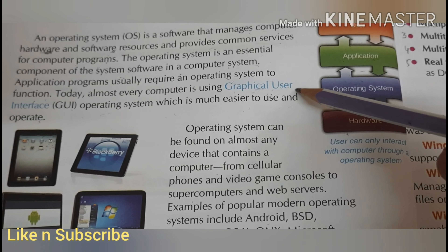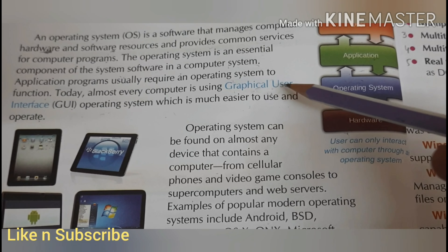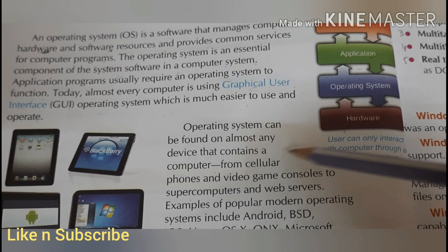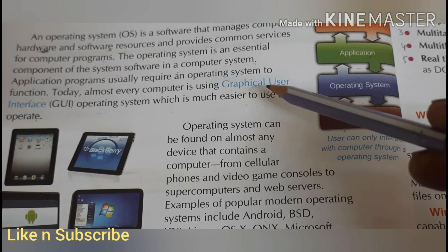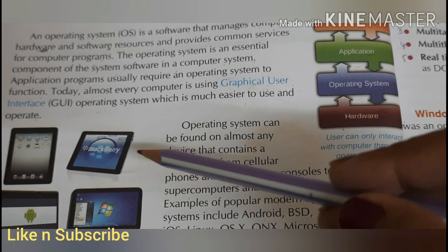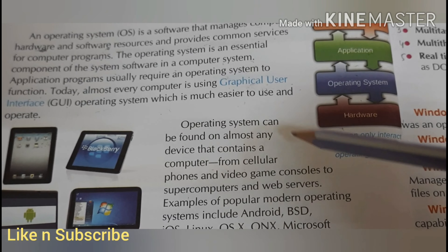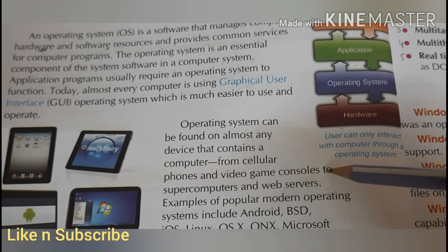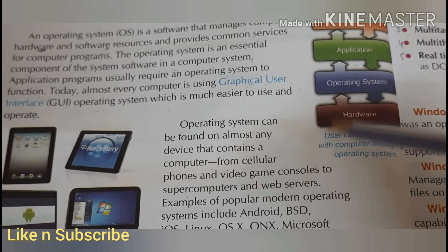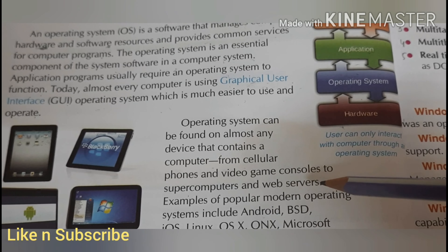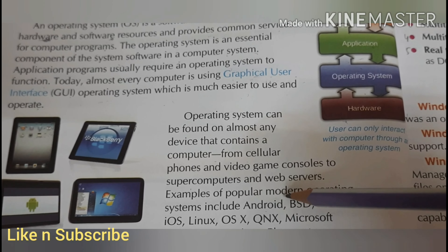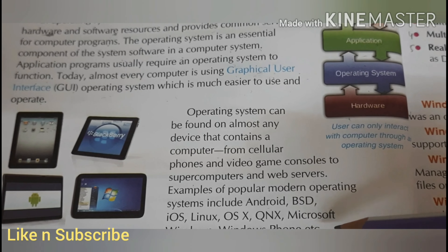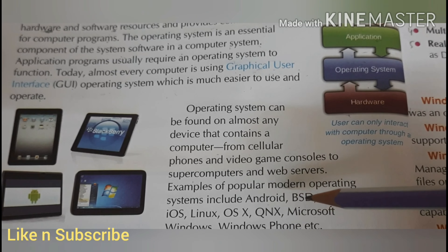You see the pictures and graphics — those are graphical. Previously, computers used CUI, that is Character User Interface, but now almost all operating systems are using GUI technology. The operating system is managing everything graphically. An operating system can be found in almost any device that contains a computer, from cellular phones and video game consoles to supercomputers and web servers. Popular operating systems include Android, BSD, iOS, Linux, OS X, QNX, Microsoft Windows, and Windows Phone.